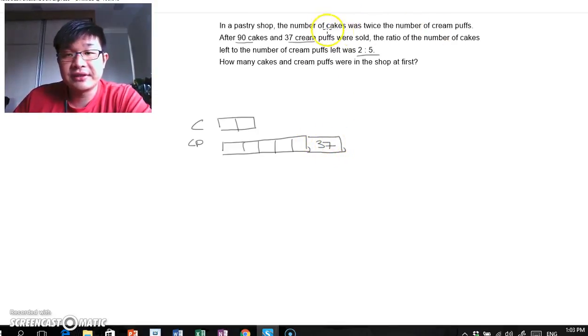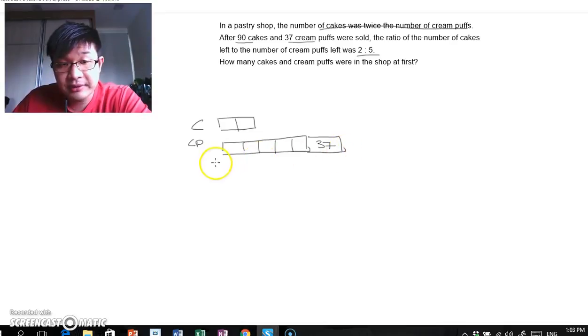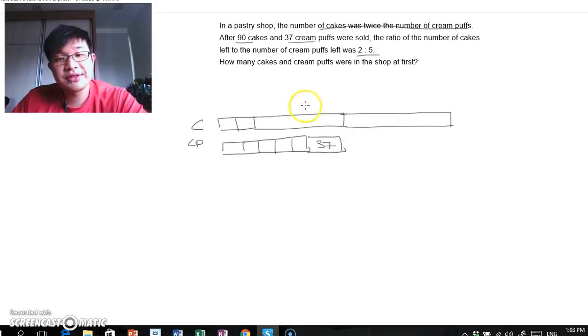Now we need to note that the first sentence states that the number of cakes was twice the number of cream puffs. Which means if this was the original number of cream puffs, this would be 1 unit. Which means I need to add on 1 unit for the cakes and another 1 unit for the cakes. So this is 1 unit, this is another unit that makes 2 units of cakes to 1 unit of cream puffs.